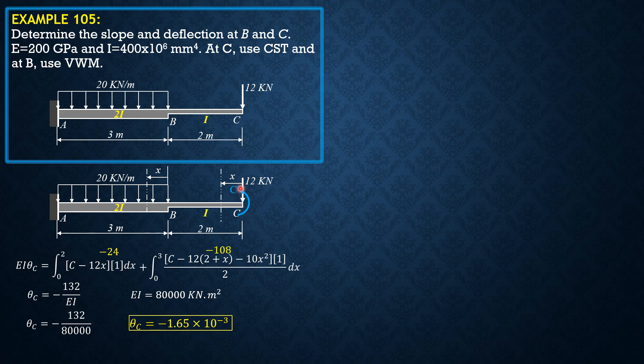Next we remove C and apply upward force P. Same sectioning, so EI delta C is equal to integral from 0 to 2 of P times x minus 12x.